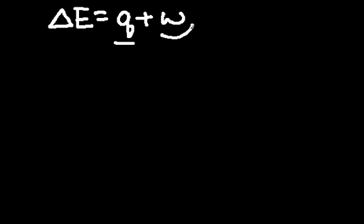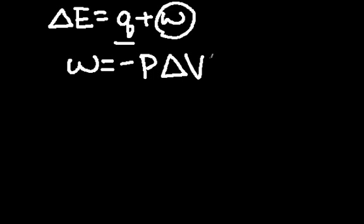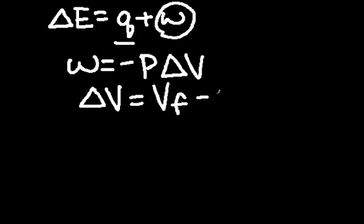From the equation, we know that ΔE is equal to the heat plus the work done by the system. The problem gives us q, so all we must do is find the work done by the system. Work can be expressed in terms of pressure and volume by negative P times ΔV. That is, the negative pressure times the change in volume.